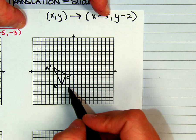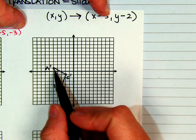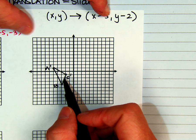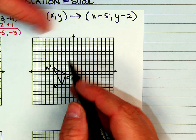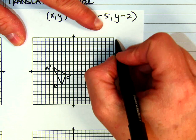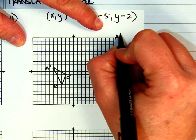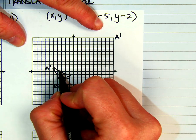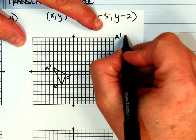But the reason why this is different is because we are starting off with the prime. So we are going backwards. So I need to figure out, okay, what are the coordinates of my actual image? So if I have A prime at (-5,1).